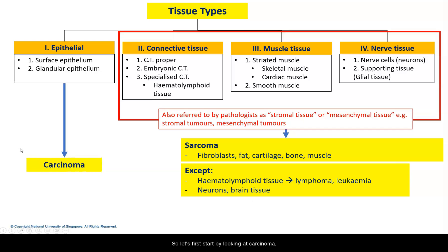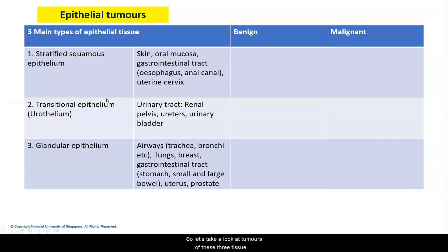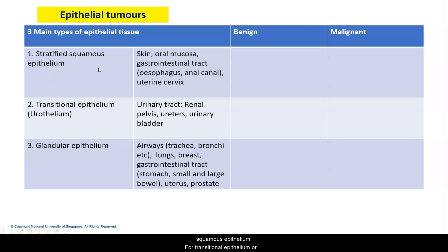Let's start by looking at carcinoma, and I want to bring you back to the three main types of epithelial tissues we will encounter: stratified squamous epithelium, transitional epithelium, and glandular epithelium. A quick recap of where these tumours can be found — skin, oral mucosa, gastrointestinal tract such as the esophagus and anal canal, and uterine cervix, are examples of stratified squamous epithelium.